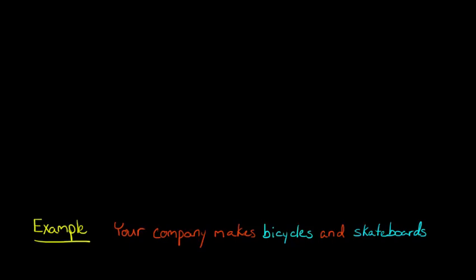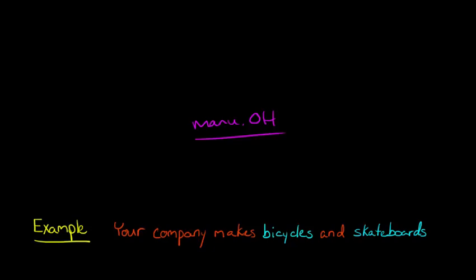So let's say that you start a company that makes bicycles and skateboards — you manufacture them and sell them to bike shops and skate shops. In the past, when you think about allocating your manufacturing overhead, you would just allocate that based on something like machine hours.